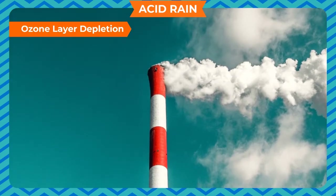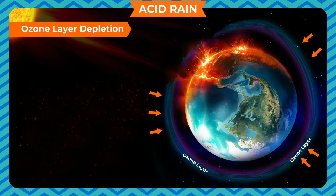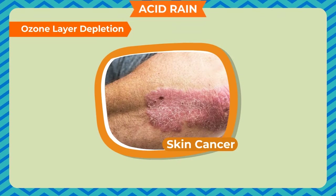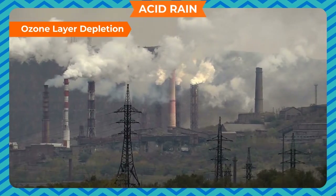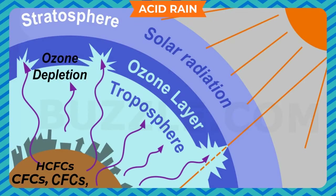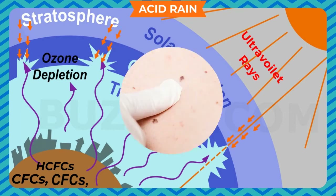Air pollution also harms the ozone layer. The ozone layer in the upper atmosphere is very useful for us as it protects us from ultraviolet rays of the sun, which are very harmful and can cause diseases like skin cancer. Chemicals like chlorine and bromine released from industries float in the upper atmosphere and deplete the ozone layer, creating holes in it. If this continues, ultraviolet rays will directly fall on the earth and humans and animals will suffer from skin cancer.